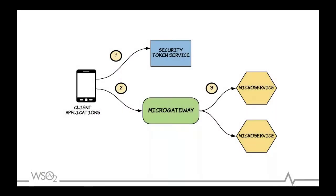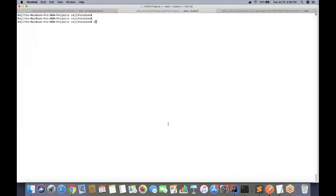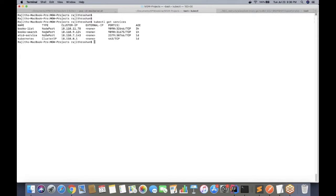Let me briefly do a demonstration. Here I have a microservice that I am going to expose using the micro gateway, so end users will no longer be able to access the microservice directly — they will have to connect via the micro gateway using a secure token. In this demo we are using a use case where API developers are developing an online bookstore. I have a service to list books, deployed in Kubernetes.